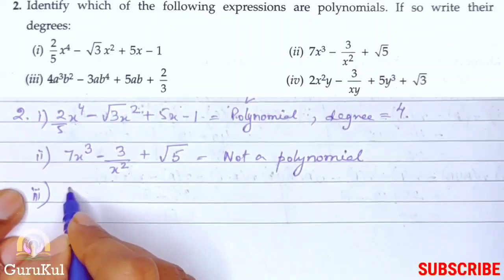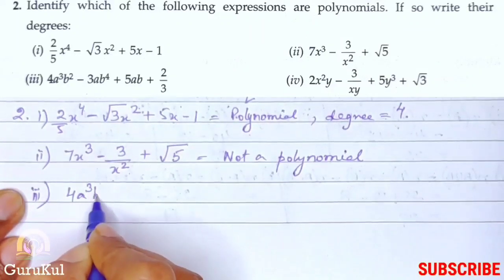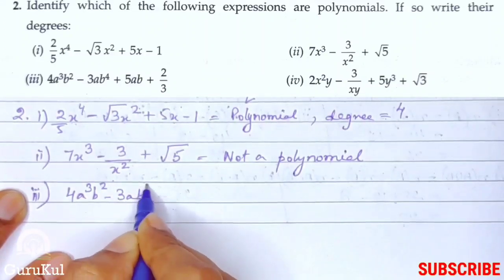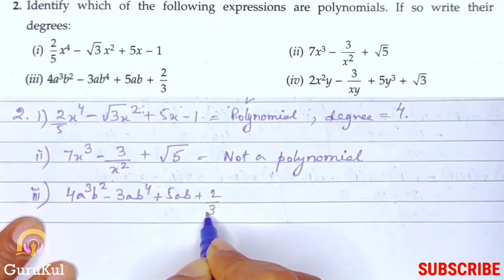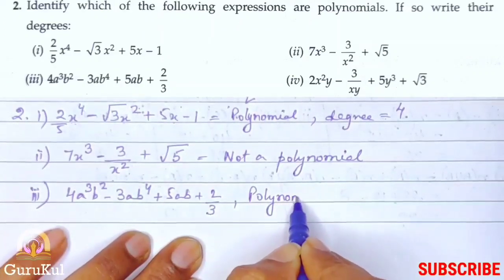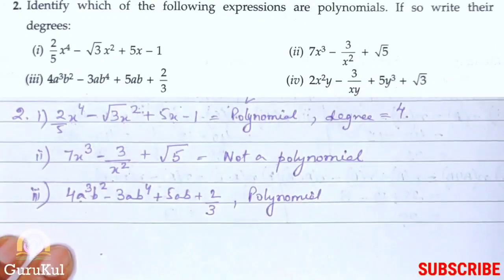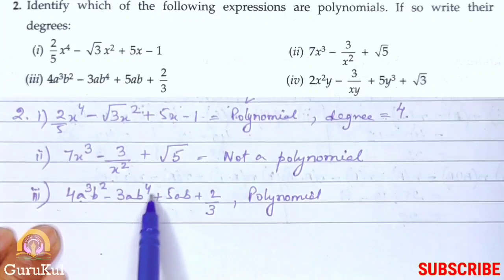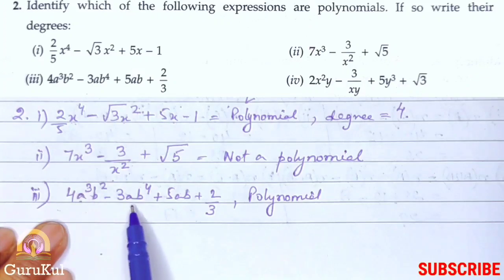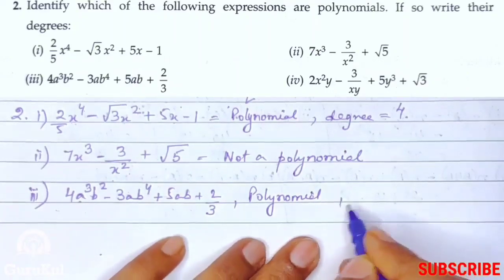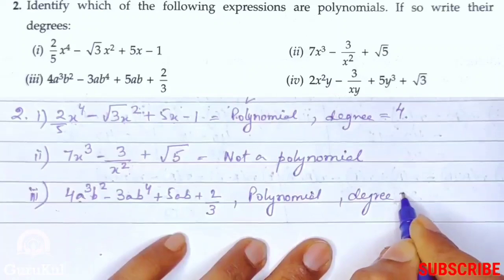Third one. Four a cube b square minus three a b to the power four plus five a b plus two by three. Yes, this is a polynomial. And its highest degree is five. How? Now see. This is one term, another, third and fourth. So in this term literal is a to the power three, b to the power two. Add both, it becomes five. Here is a to the power one, b to the power four. Four plus one is five. A one, b one becomes two. So, the highest degree is five. This is how we calculate.